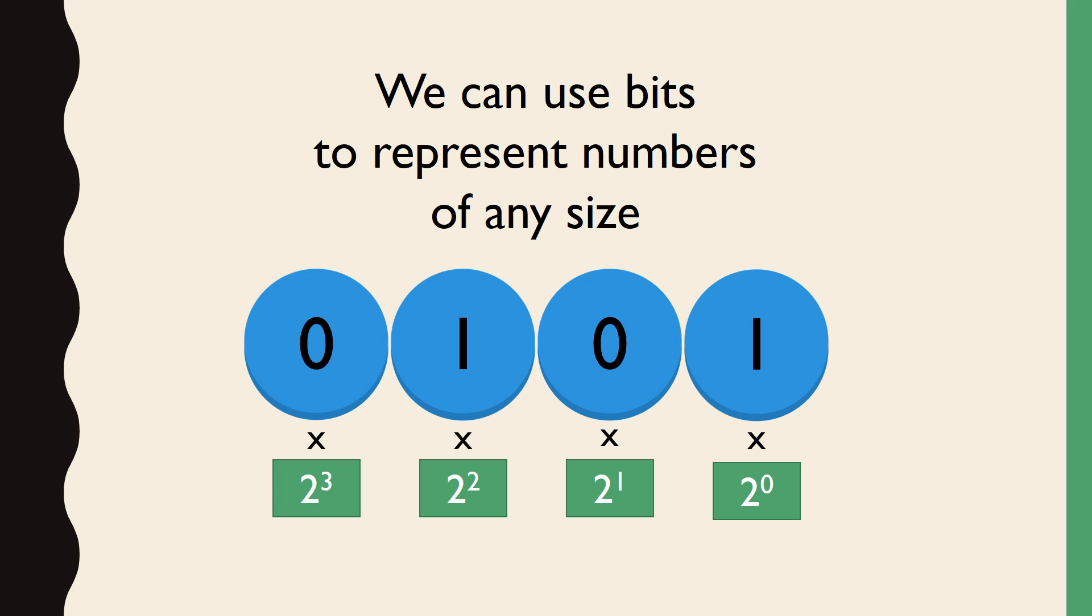Let's look at this example. 0101 is a 4-bit binary number. We can figure out its value by multiplying each binary digit by its place value. The leftmost bit is 0 times its place value, 2 to the 3, or 0 times 8, which is 0. The next bit is 1 times its place value, 4. The next, 0 times 2, and the last is 1 times 1. Adding these results together, we get 0 plus 4 plus 0 plus 1, which is the decimal number 5.